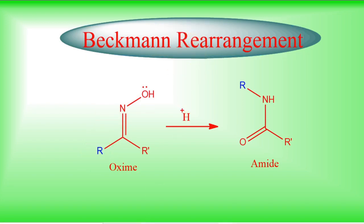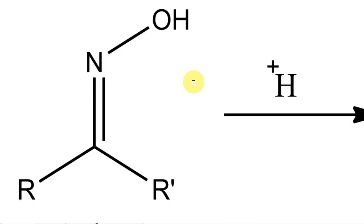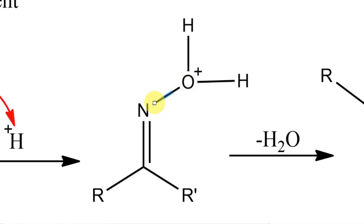Let us look at the mechanism of Beckman rearrangement. The OH picks up a proton — this lone pair stays between oxygen and hydrogen, forming a new bond. So OH bonded with hydrogen has three bonds on oxygen, giving it a plus charge. This can then leave as water. When that O–N bond breaks, the two electrons go onto oxygen as a lone pair, making nitrogen electron deficient.